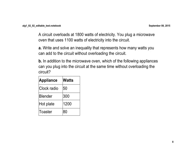Write and solve an inequality that represents how many watts you can add to the circuit without overloading the circuit. Well, it says it overloads at 1,800, so we better have less than 1,800 on there because we don't want it to overload.